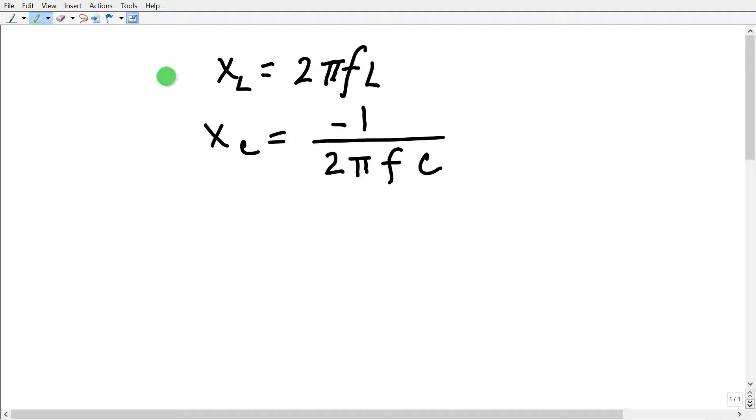So what we really have is inductive reactance XL, 2π times the frequency times the inductance equals minus minus 1 over 2πfc. They are equal and opposite, so they add up to zero reactance.